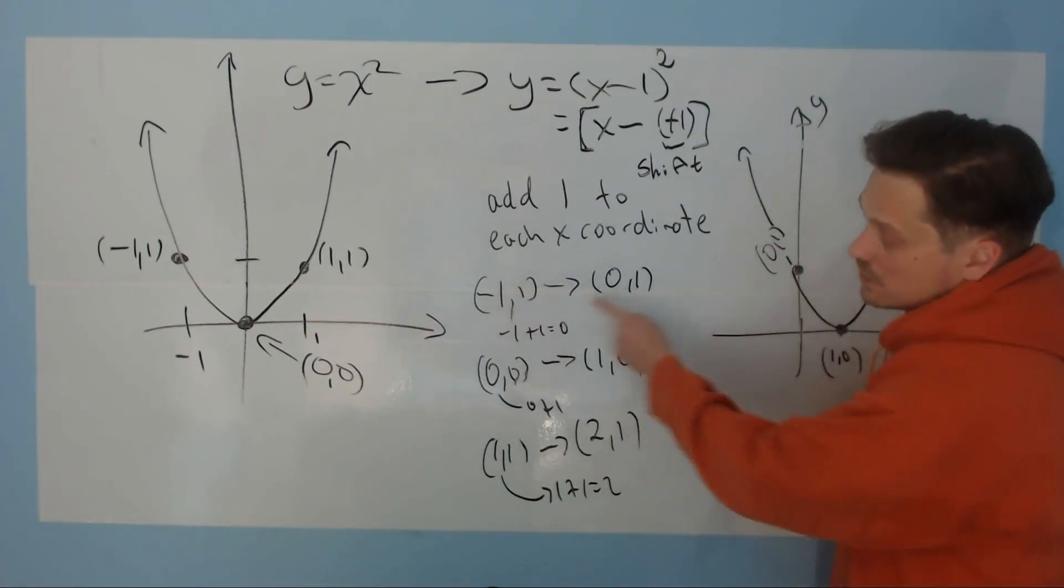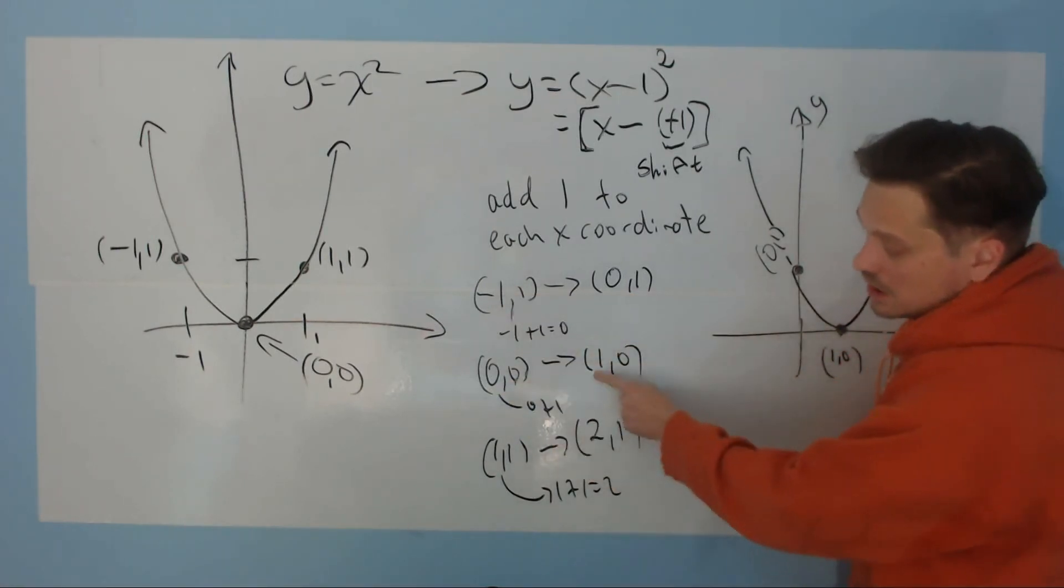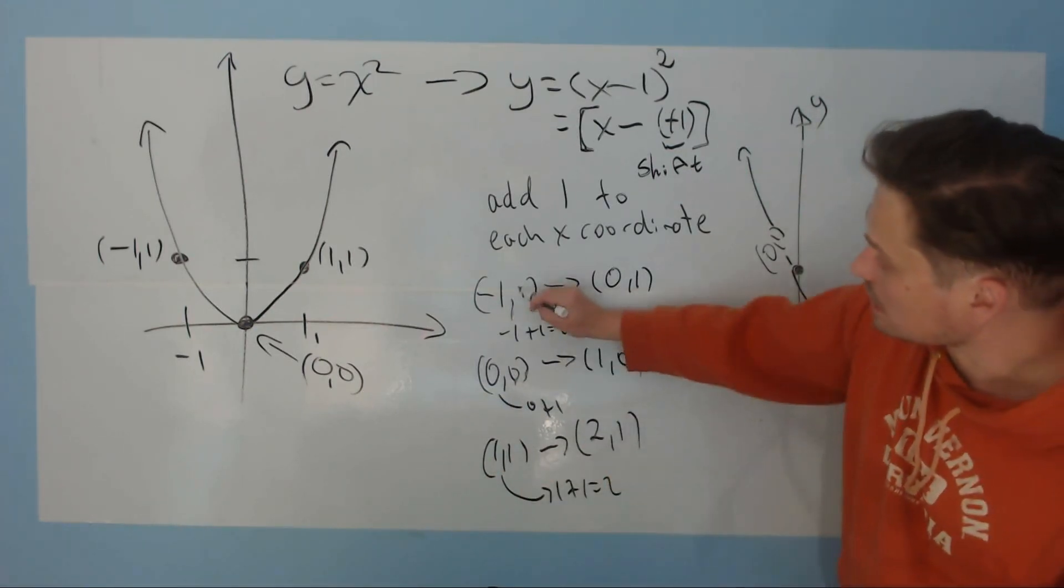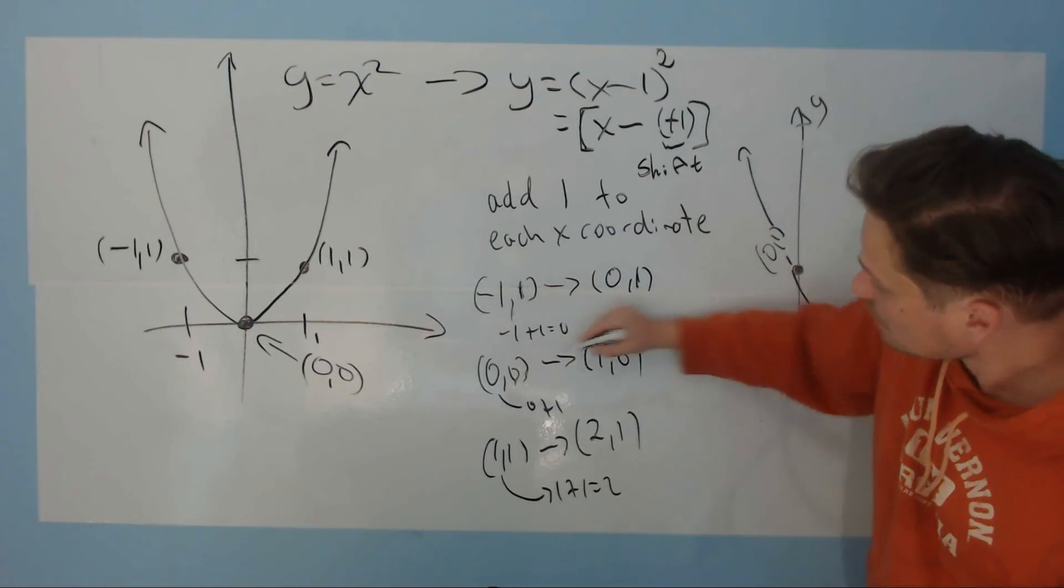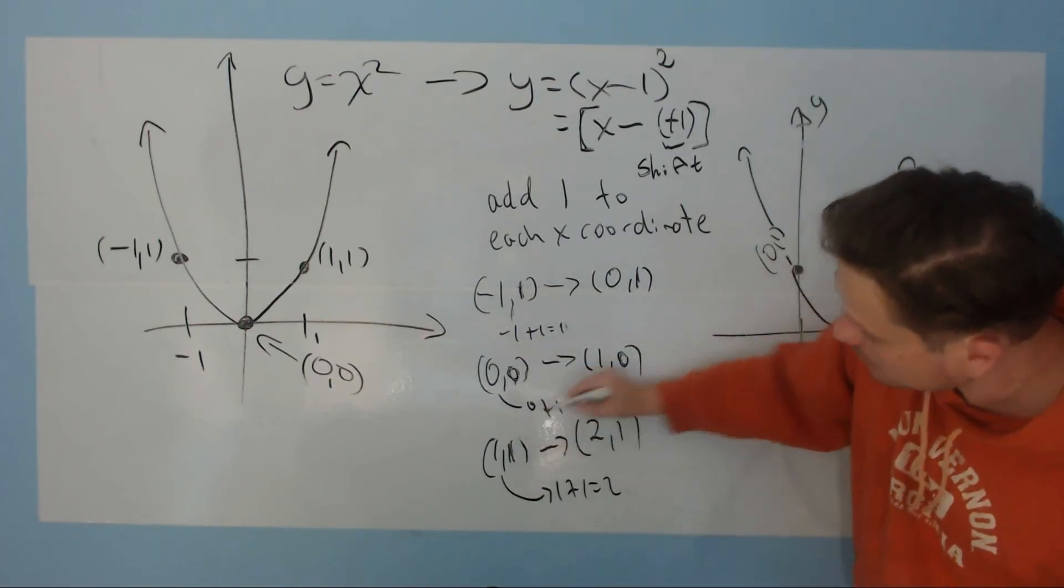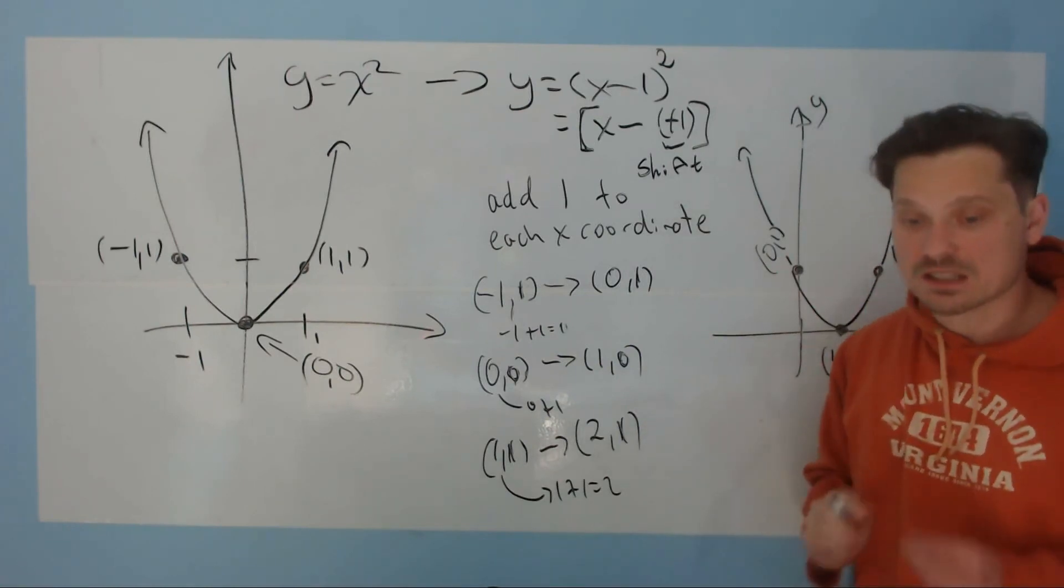So what I mean is, remember, like the negative 1 became 0, the 0 became 1, this 1 became a 2. The y-coordinate, this value is still 1. This value of 0 is still 0. This value of 1 is still 1. The y-coordinate is not changed.